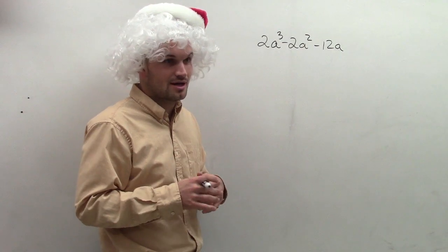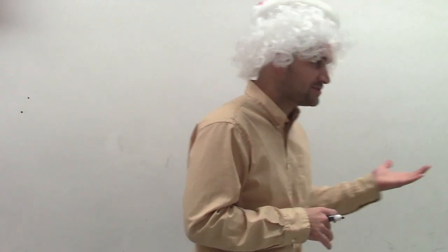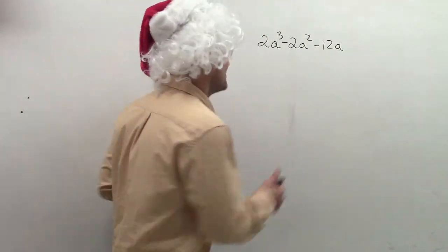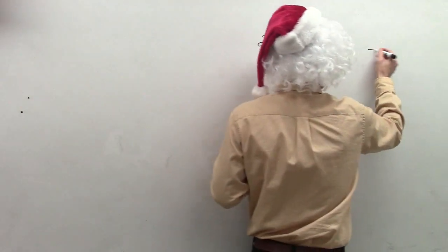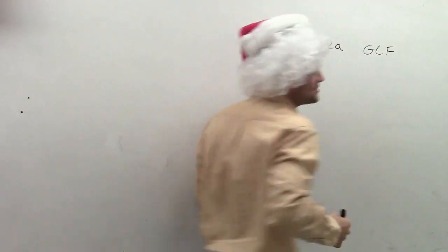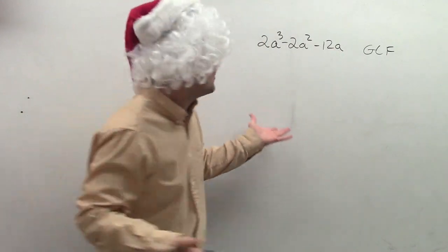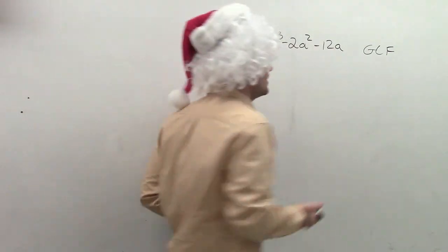Which is George Christmas Franklin. Factor out the GCF. So what you look at is, what do they share? So what is the GCF? 2a. Yes, because they all share 2 and they all share an a. So therefore, you can say 2a.